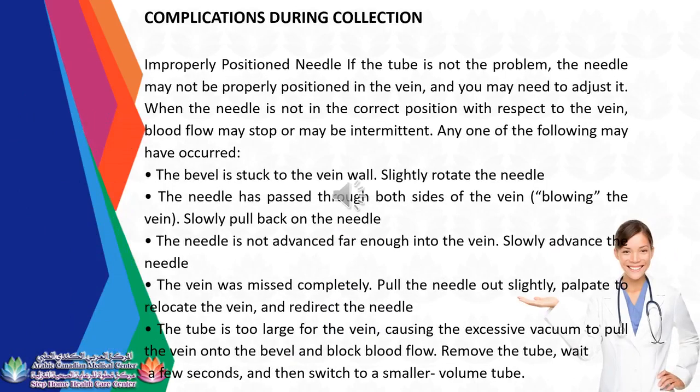Improperly positioned needle: If the tube is not the problem, the needle may not be properly positioned and may need adjustment. Possible issues include: the bevel stuck to the vein wall (slightly rotate the needle); the needle passing through both sides of the vein, blowing the vein (slowly pull back); the needle not advanced far enough (slowly advance); the vein missed completely (pull out slightly, palpate to relocate, and redirect); or the tube being too large for the vein, causing the vacuum to pull the vein onto the bevel (remove the tube, wait a few seconds, and switch to a smaller volume tube).